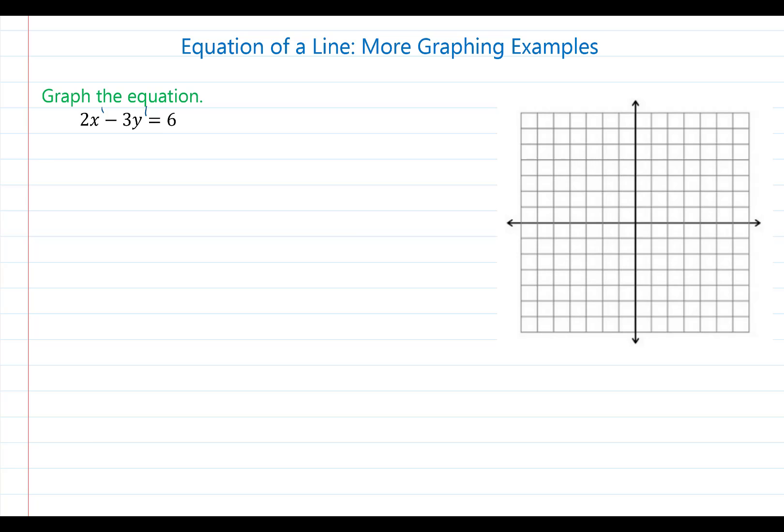The first strategy is to convert this equation to slope intercept form. Recall that slope intercept form is y equals mx plus b. So 2x minus 3y is equal to positive 6. The first thing we're going to do is subtract 2x to both sides.